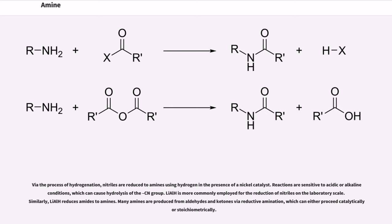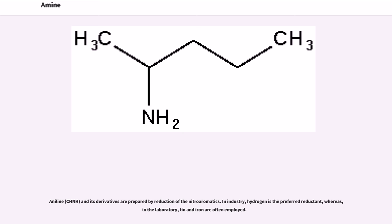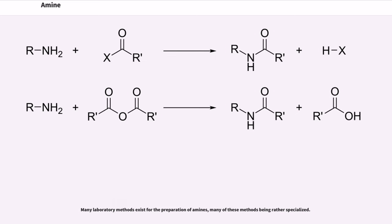Many amines are produced from aldehydes and ketones via reductive amination, which can either proceed catalytically or stoichiometrically. The aniline, C6H5NH2, and its derivatives are prepared by reduction of the nitroaromatics. In industry, hydrogen is the preferred reductant, whereas in the laboratory, tin and iron are often employed. Many laboratory methods exist for the preparation of amines, many of these methods being rather specialized.